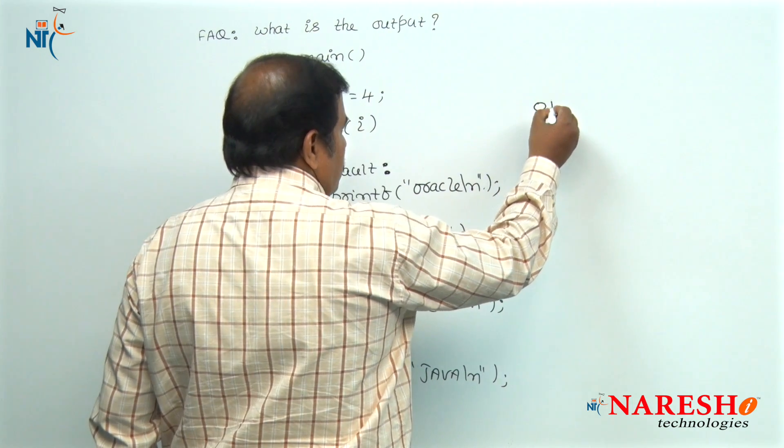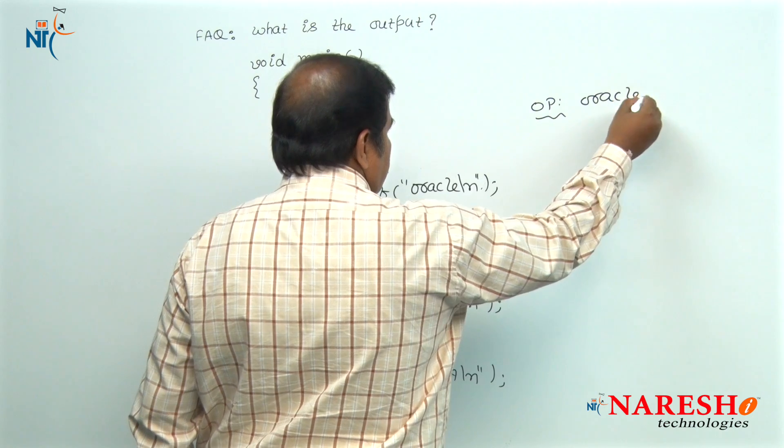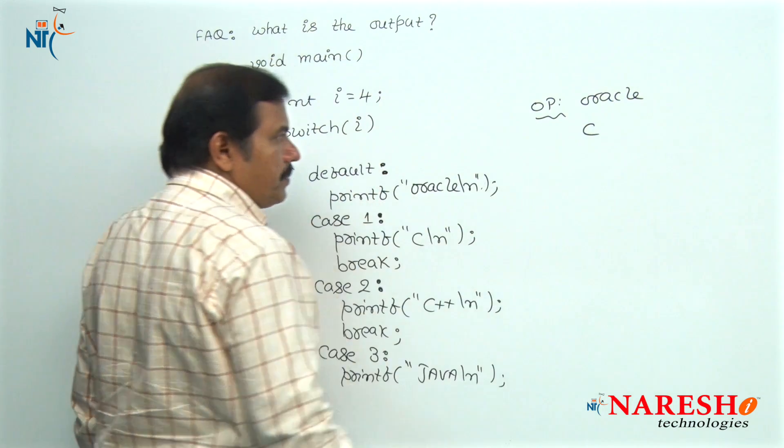Hence, the output is oracle and C displayed on to the screen. So finally, the output of this code is oracle is printed as well as C is printed.